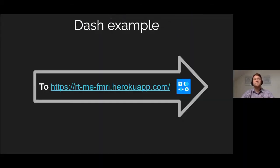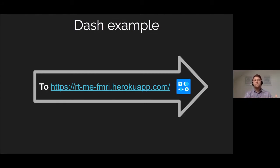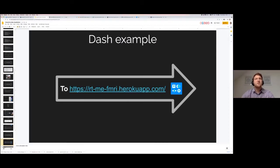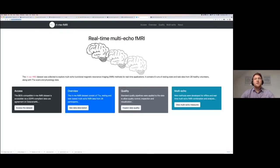Now I want to go to Dash. Dash allows us to bring everything together into an application that's much more intuitive for users — it allows data exploration and you can put it on the web. I want to show an example I built for a paper. I'm envisioning a kind of future where people are publishing resource outputs like this, not only a PDF paper — really opening your data and code in a way that people can explore it.